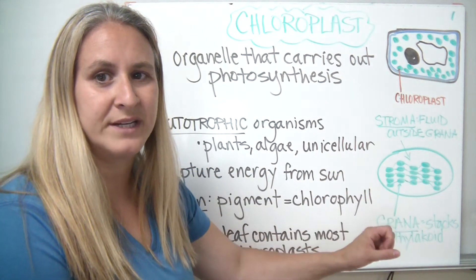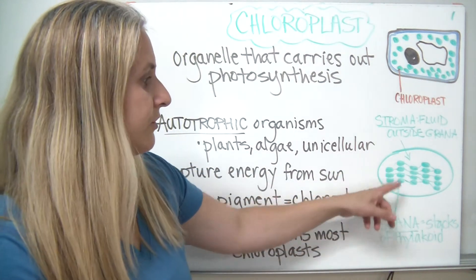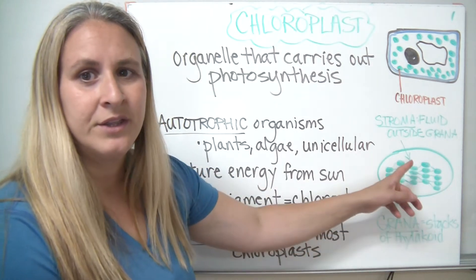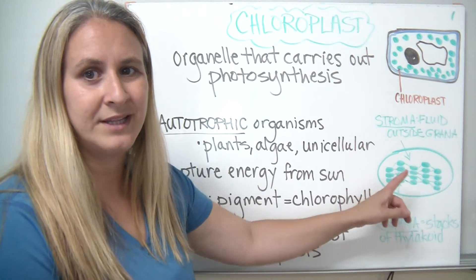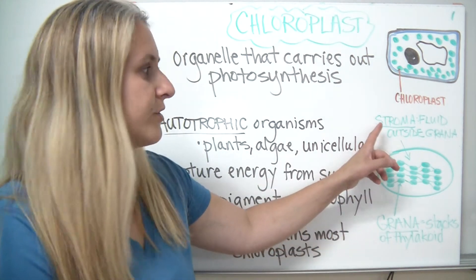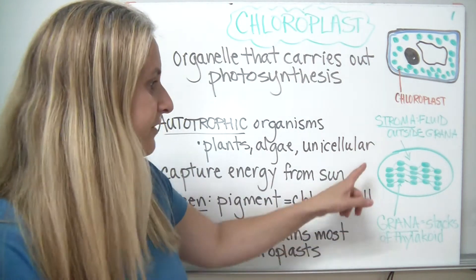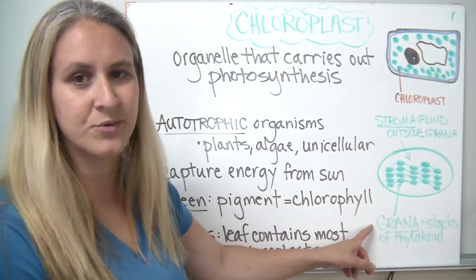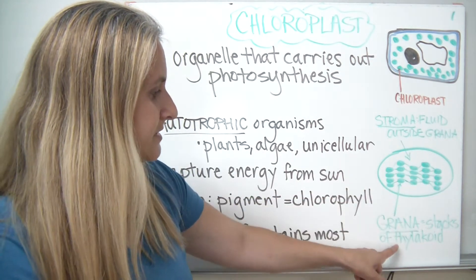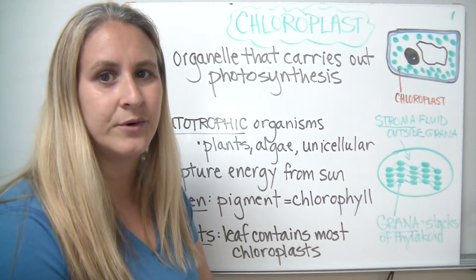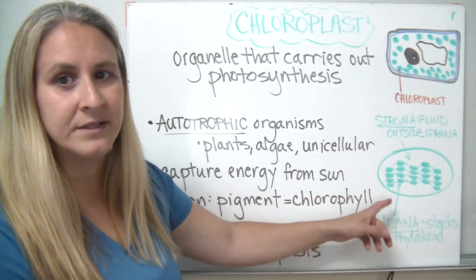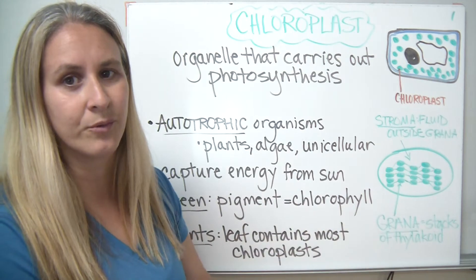This is just a very basic simplified diagram of a chloroplast. You'll notice there are a couple of things to it. It does have a membrane surrounding it. There's a liquid portion surrounding these green stacks, and that liquid portion is called the stroma. It's the fluid outside of these stacks of membranes, which are called the grana. The membranes themselves are called thylakoid membranes, so we have stacks of thylakoid membranes which make up what's called the grana.